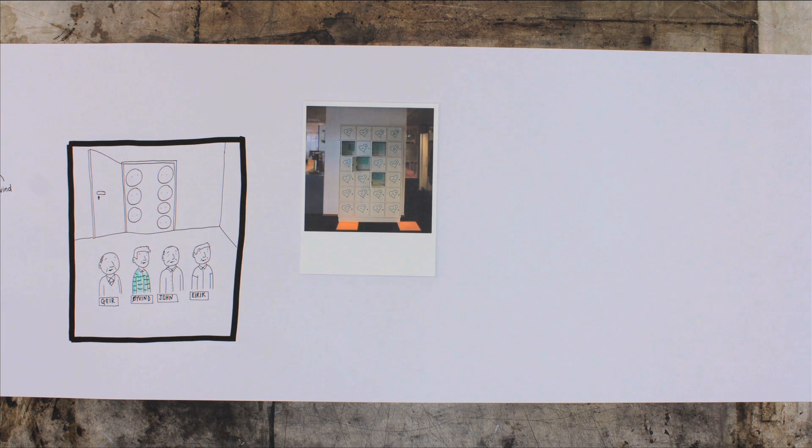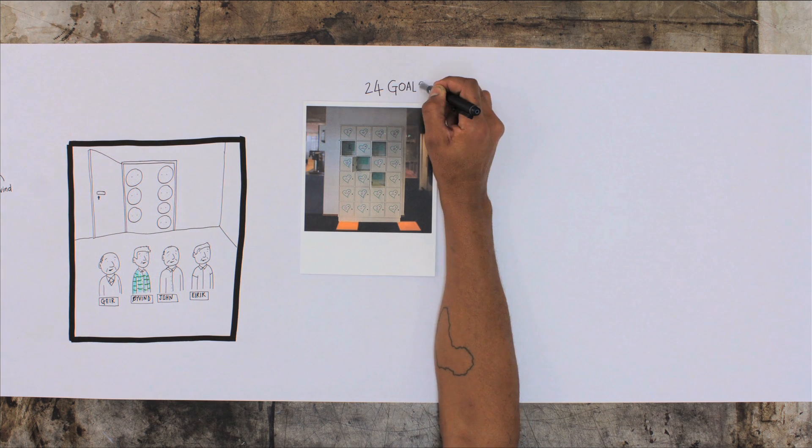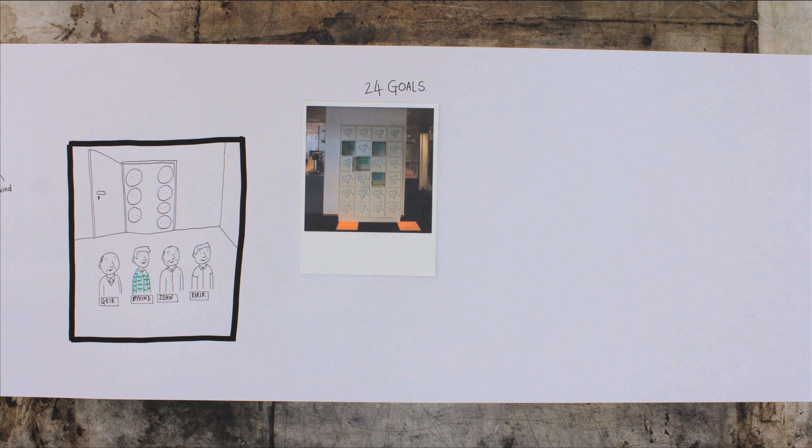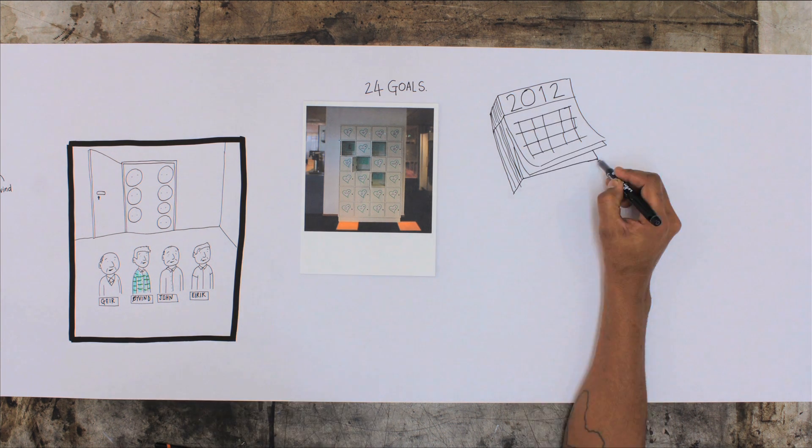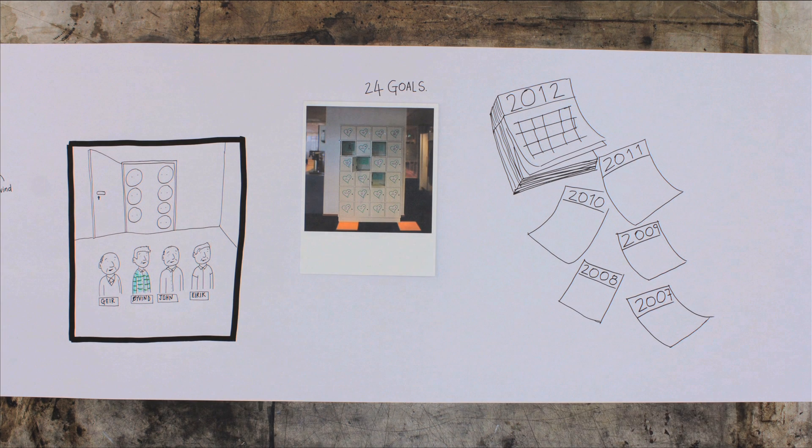Some big strategic goals were set: 24 of them, in fact, to be achieved in the first ten years. Five years on, half of them had already been achieved. They've been vital to Energy Micro's rapid growth.